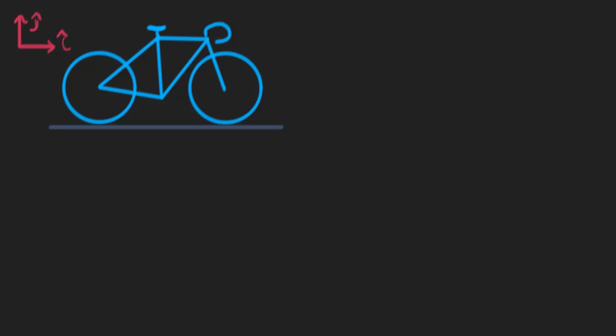Here's a problem I would like to talk about today. We have this bicycle — I didn't draw the rider on it because I'm not very good at drawing people — and the bicycle is moving forward at a velocity v in the i-hat direction. Furthermore, v-dot is bigger than zero, meaning this bicycle is speeding up as it goes along, so it's accelerating to the right. Now as the bicycle is cruising along, suppose that the two wheels are rolling without slipping on the pavement.